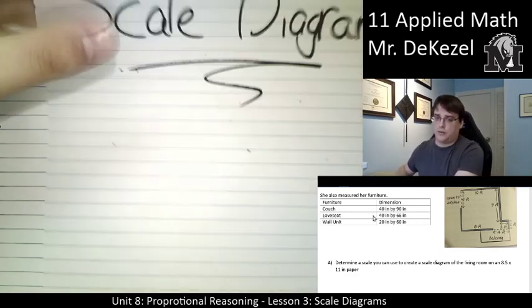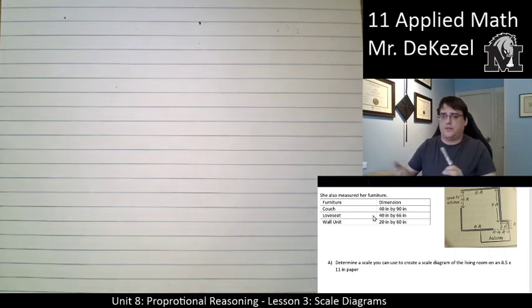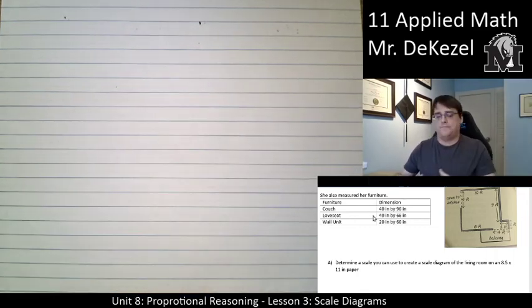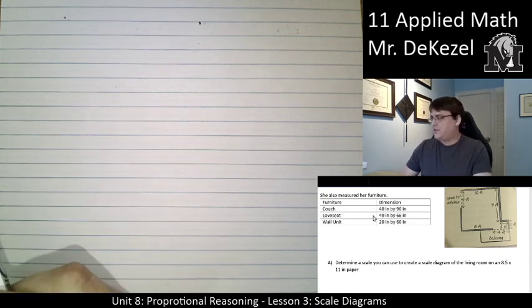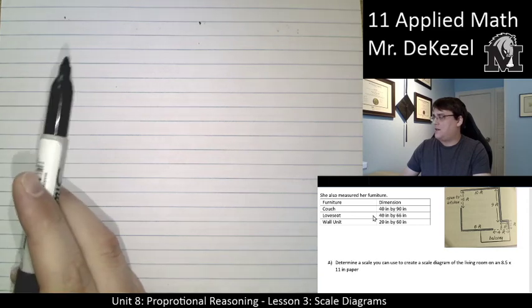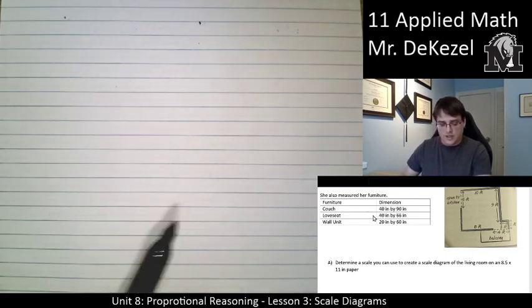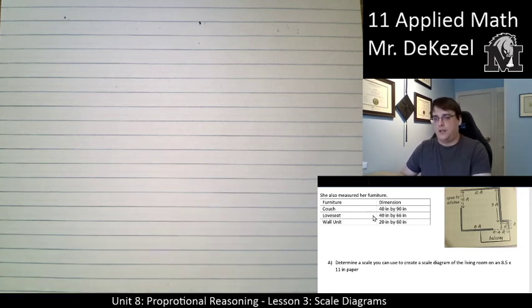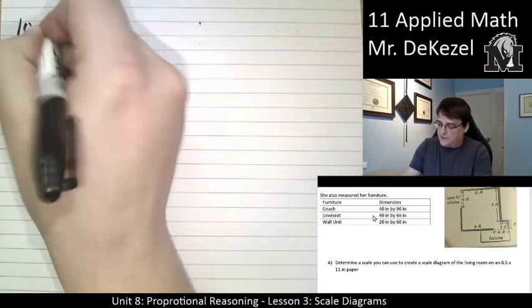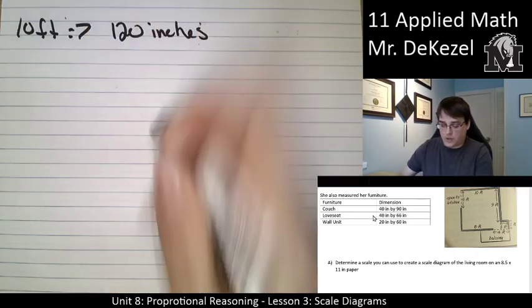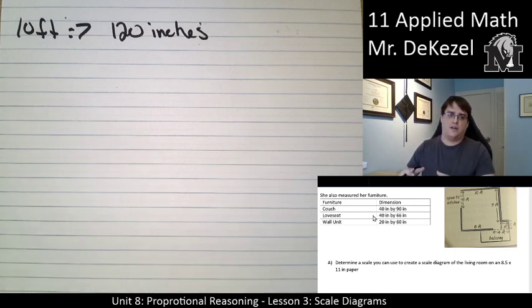We want to determine a scale that we can use to create a scale diagram of the living room on an 8.5 by 11 paper. What we want to do when we're talking about scale diagrams is first of all put it into the unit that we're going to be drawing in. We're going to be drawing in inches on our paper. So we're going to want to turn the longest edge into inches. You can see from the diagram that 10 feet across should work. If I take 10 feet I can turn that into inches by multiplying by 12 to get 120 inches across.